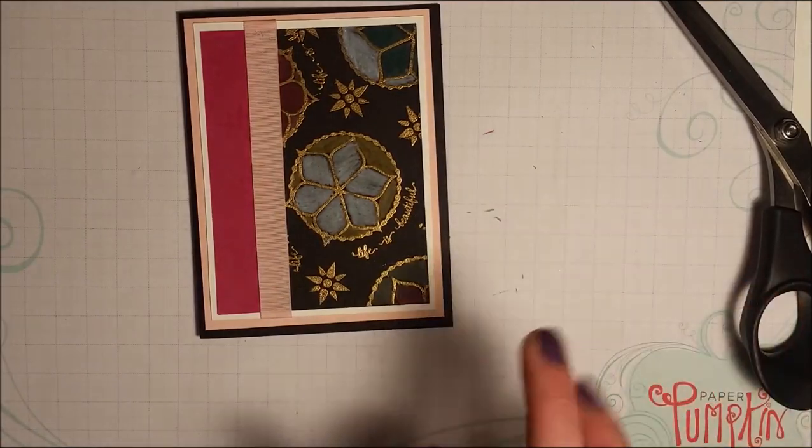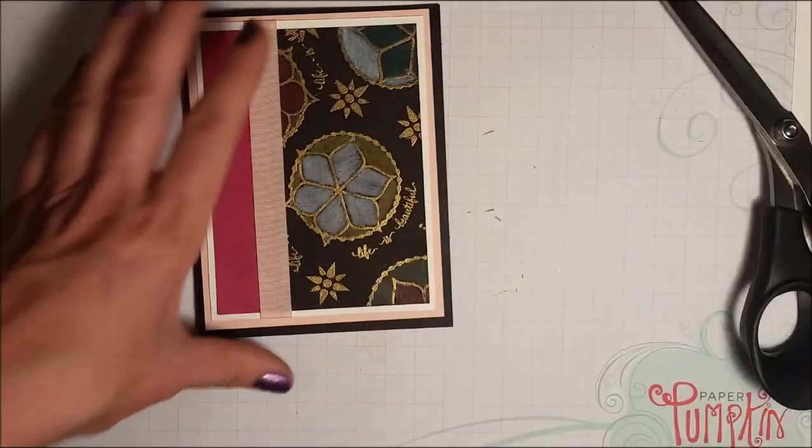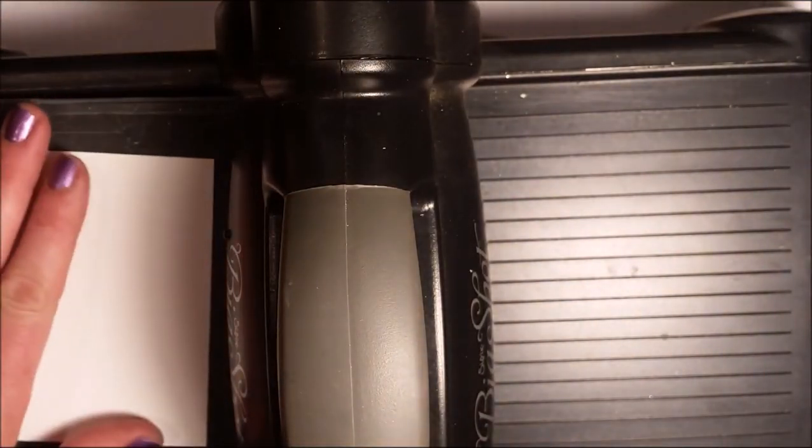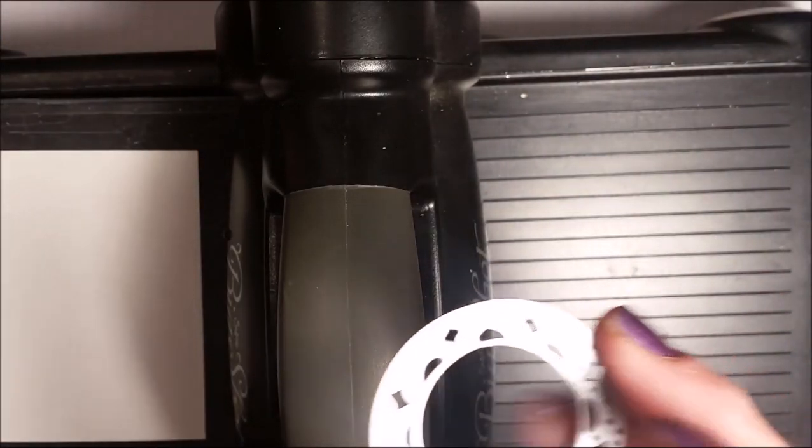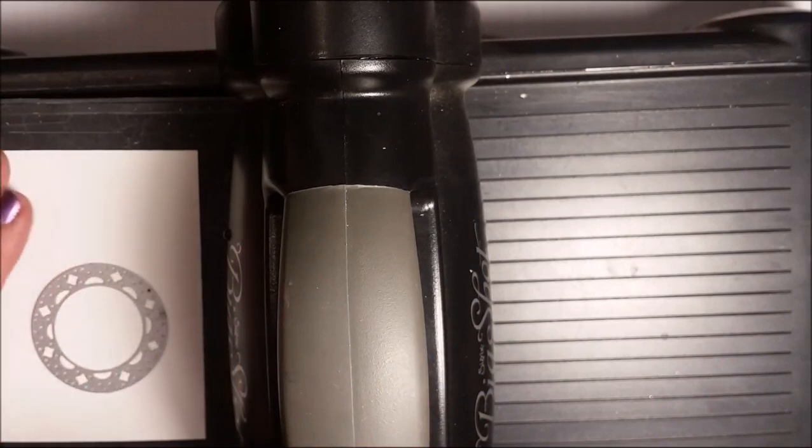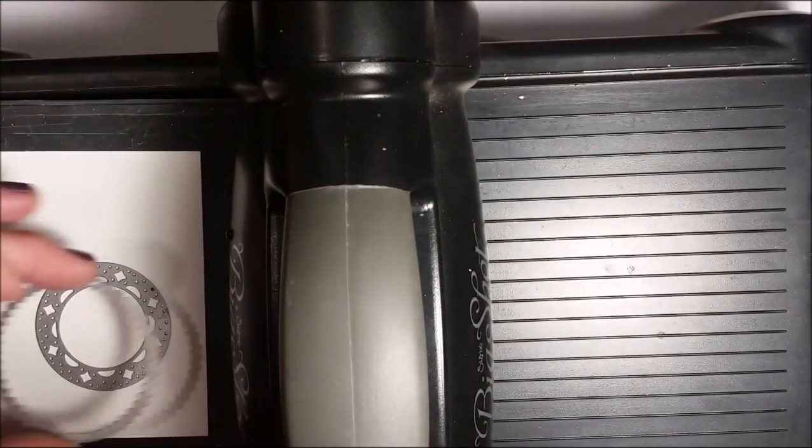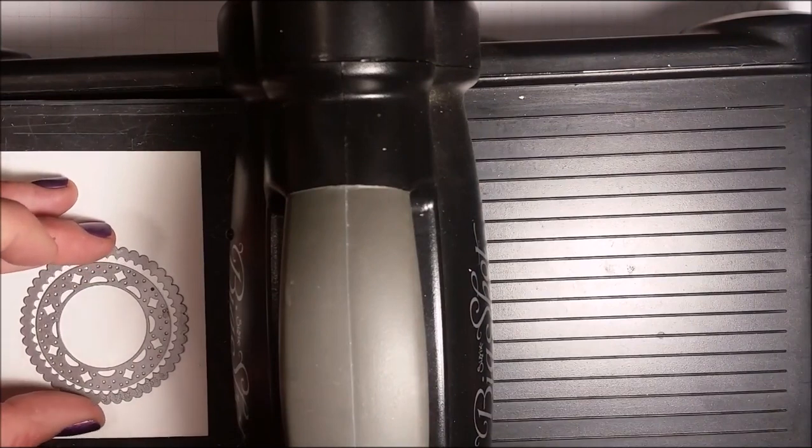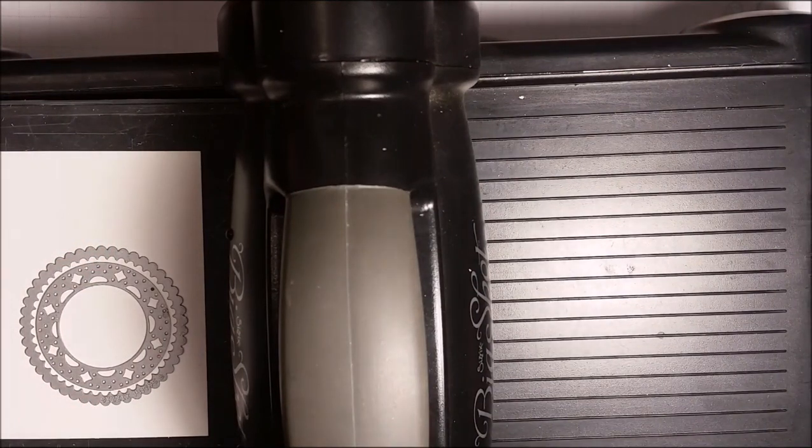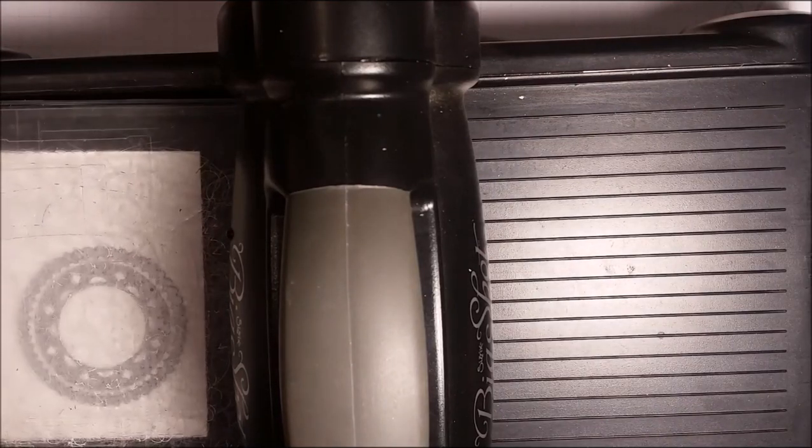Okay. Now it's time to do some Big Shot-ing. So I have my multi-purpose platform and I have my precision plate right on top. I've got some Whisper White. So this is from our Eastern Medallion Thinlits dies. Gorgeous. I am just going to put that right there on the Whisper White. This is from our Layering Circles dies. I'm going to put that right on top. Then I'm going to take my plate and crank it through.